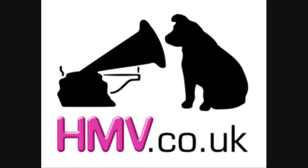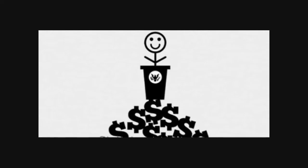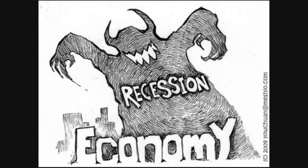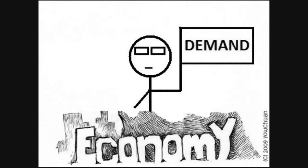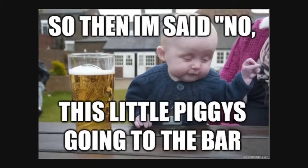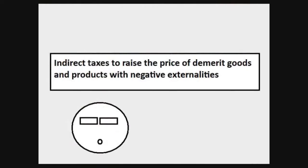The penultimate way a government can intervene to correct market failure is through fiscal policy. Fiscal policy can be used to alter the level of demand for different products and also the pattern of demand within the economy. Indirect taxes can be used to raise the price of demerit goods and products with negative externalities, designed to increase the opportunity cost of consumption.